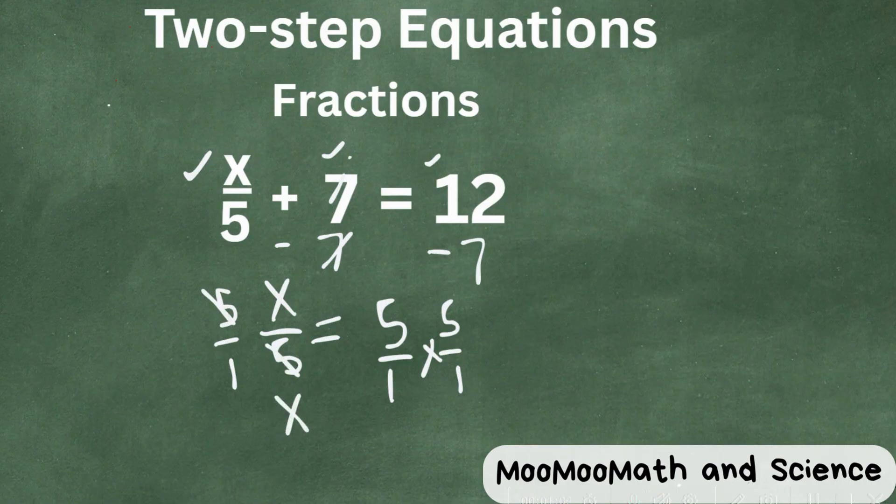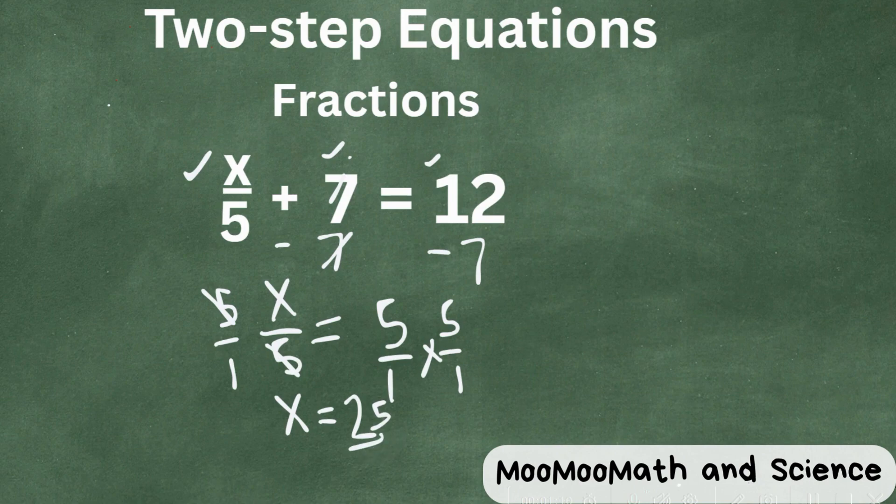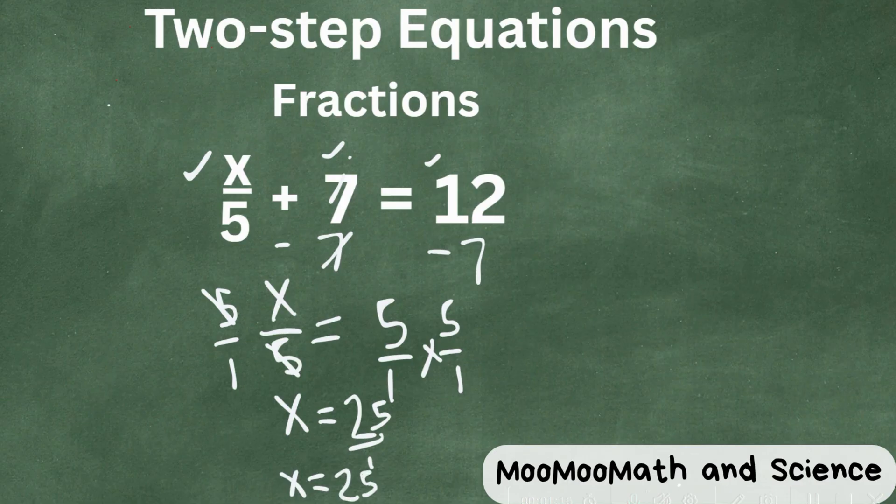And that gives us x equals 5 times 5 is 25. And technically, you would place it over 1, which equals x is equal to 25. So there's our solution.